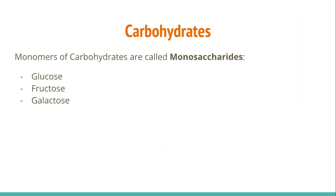When we talk about carbohydrates, there are a couple of different categories. The first one, in the monomers section, you're going to put the word monosaccharides. Monosaccharides is how we refer to a carbohydrate in its simplest form. Glucose, fructose, and galactose are the simplest forms of monosaccharides we use in our body. Fructose is found in sugars in fruits, and we also use glucose and a little bit of galactose in our body.